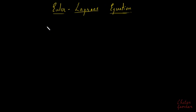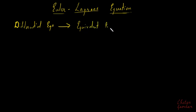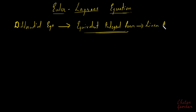In the variational method, the differential equation is first converted to an equivalent integral form, and then this form is converted to a set of linear algebraic equations. We have already seen this process. Now let us see a technique called the Euler-Lagrange equation.